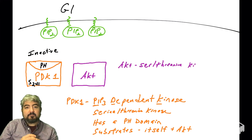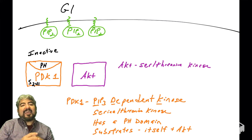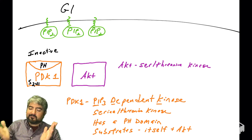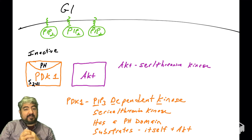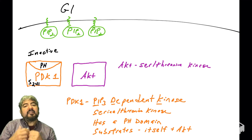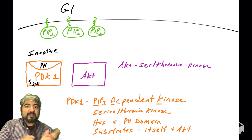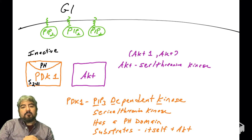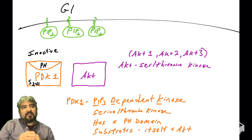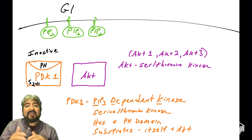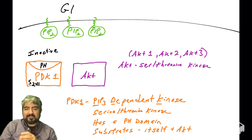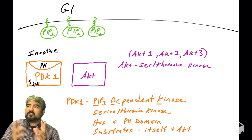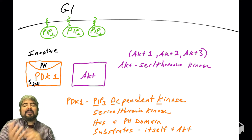Now let's introduce AKT, a very important enzyme. The name is not informative, so we won't discuss what the letters stand for. AKT is a serine-threonine kinase — it phosphorylates substrates on serine and threonine residues. There is actually an AKT gene family: AKT1, AKT2, and AKT3. They are all kinases and are regulated similarly, though there are differences.